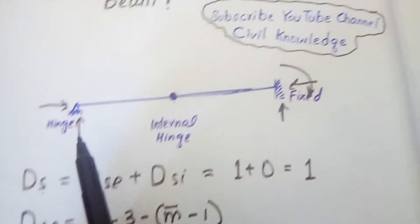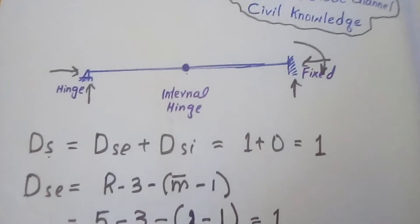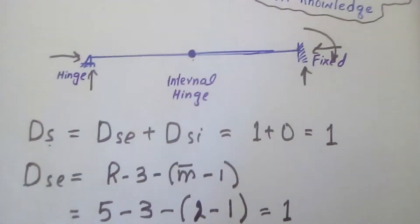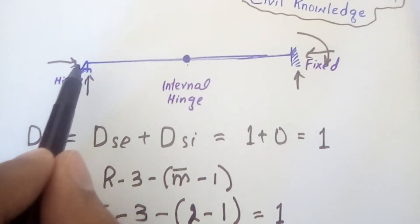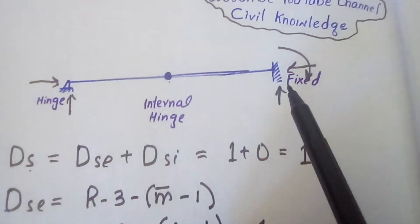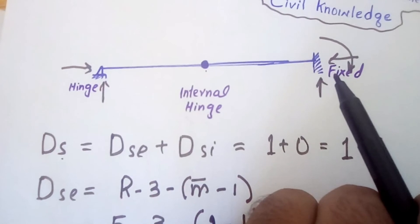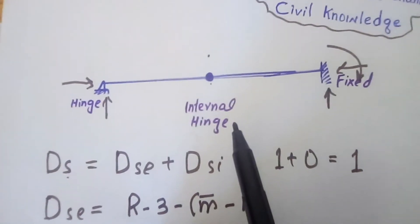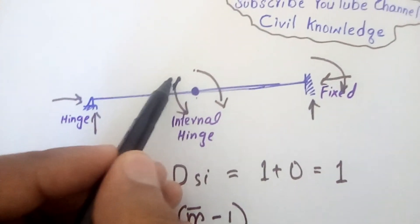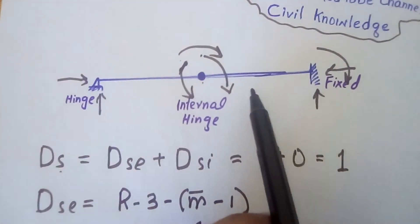As I told you, kinematic indeterminacy represents the degree of freedom at joints. At the hinge support, two reactions act but only one rotation (bending moment) is allowed, so the degree of freedom is one. At the fixed support, three reactions allow no movement, so the degree of freedom is zero. At the internal hinge, three types of movement are possible — one in each direction and one out of plane — giving a degree of freedom of three.